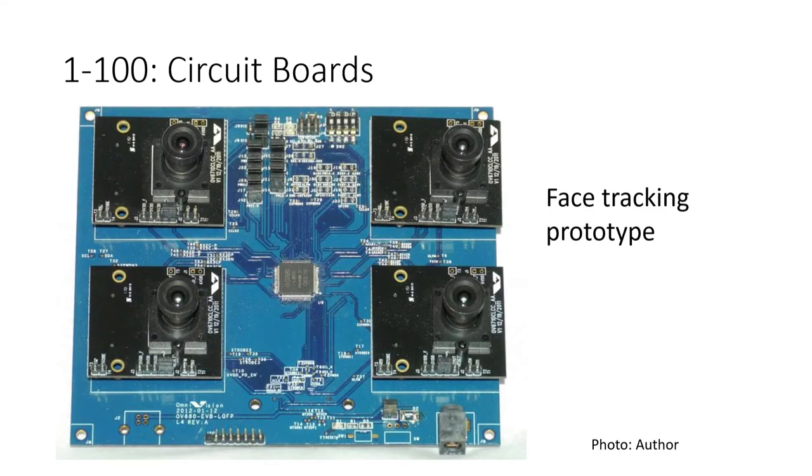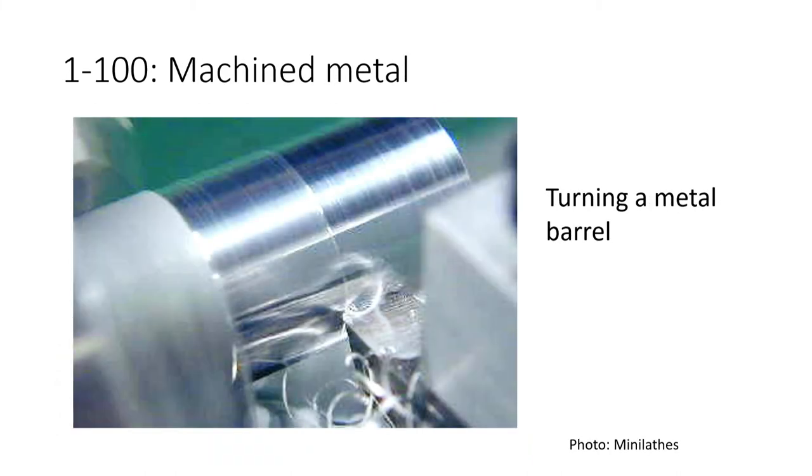You can always make a circuit board. It's never been cheaper or easier to make a circuit board. This one's interesting because it leverages an evaluation board from the sensor vendor. We just made the blue part. The green boards come from the camera vendor. You can always mill or turn some metal. That works in any quantity.